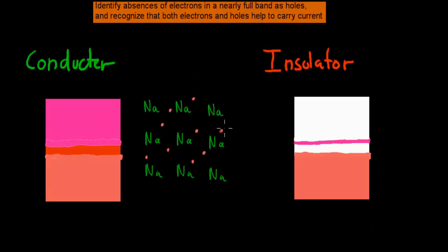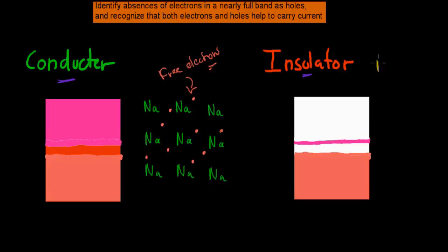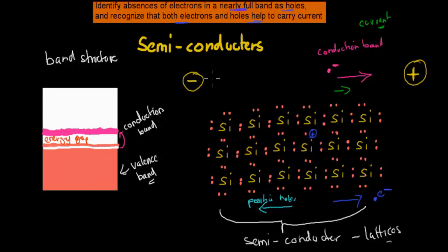If we look at conductors, for example, all of their electrons are free electrons — in a conductor we don't have holes appearing. We also don't often have that happening in insulators. We can make it happen in insulators, but we'd have to put in so much energy and temperature that by the time we have some positive holes being created, the whole structure of the insulator is already destroyed — we'd melt the material. So usually we find holes not in conductors or insulators, but in semiconductors. The famous examples are silicon and germanium.